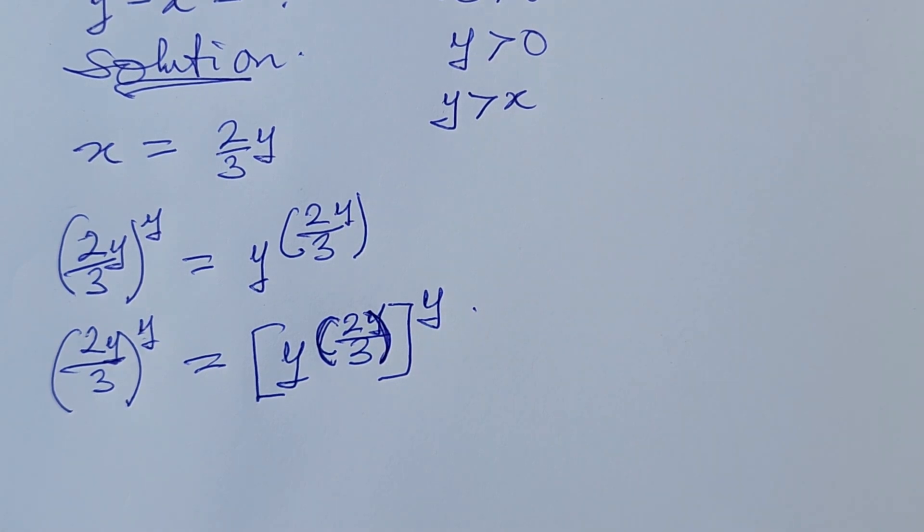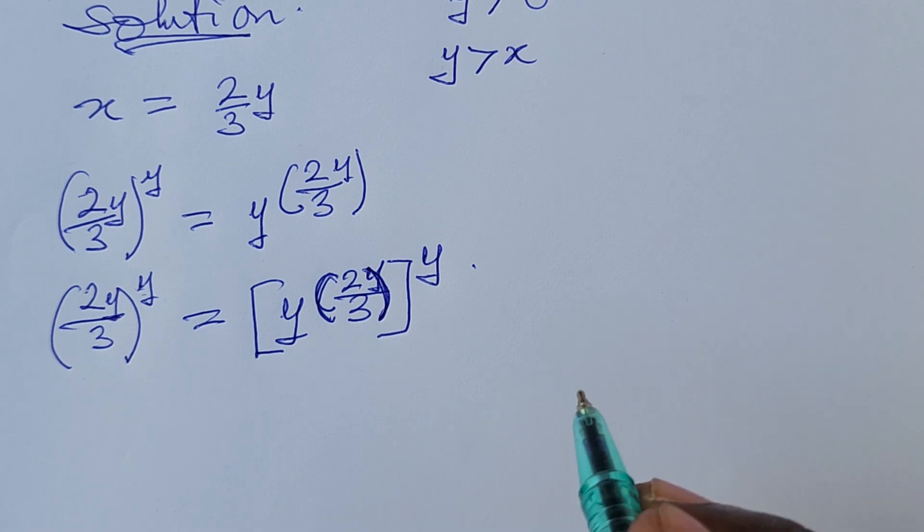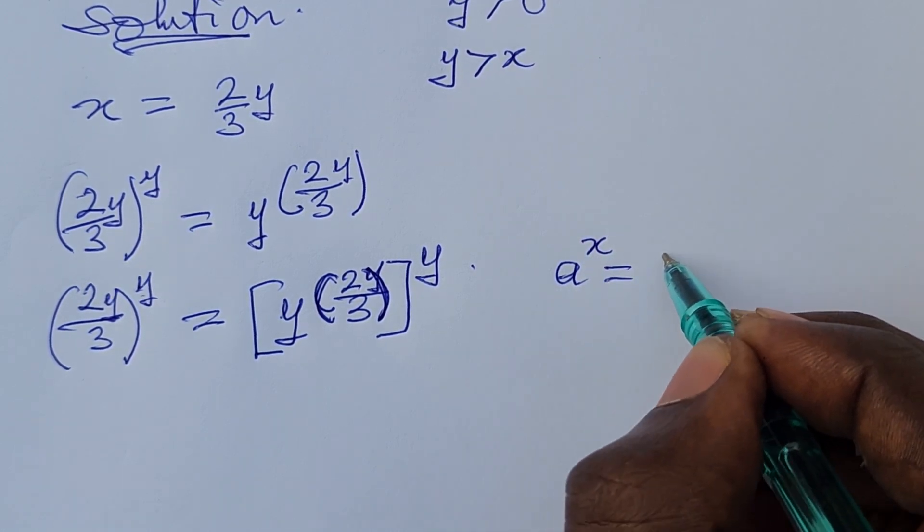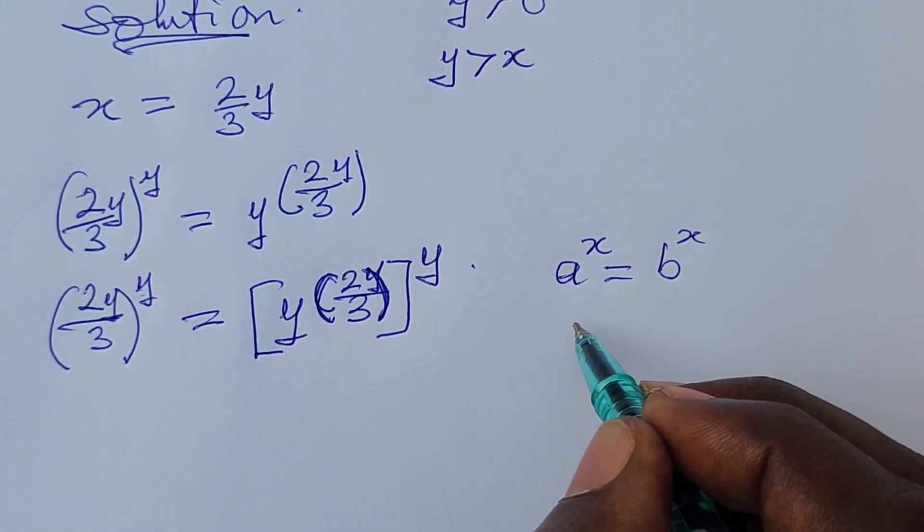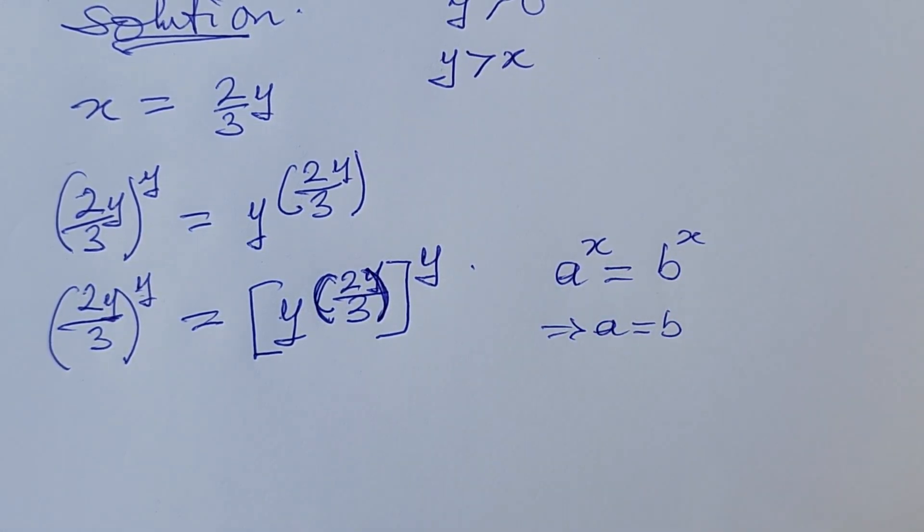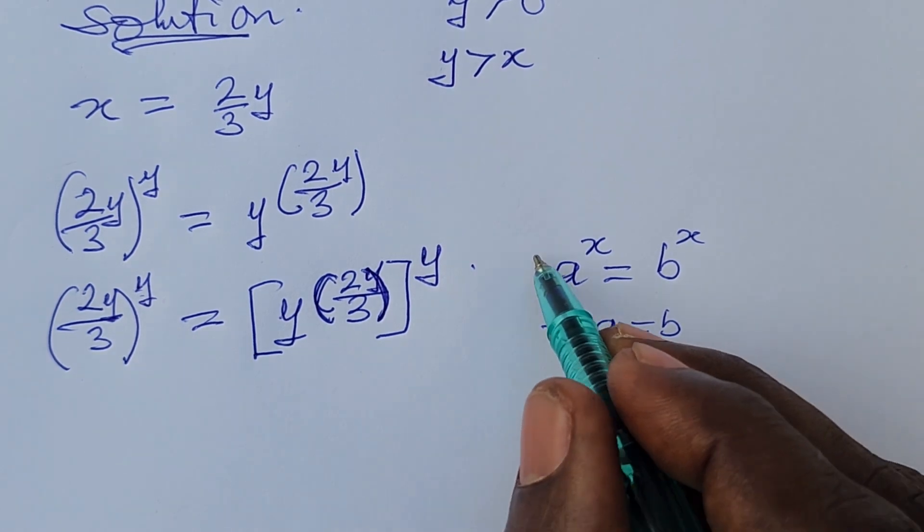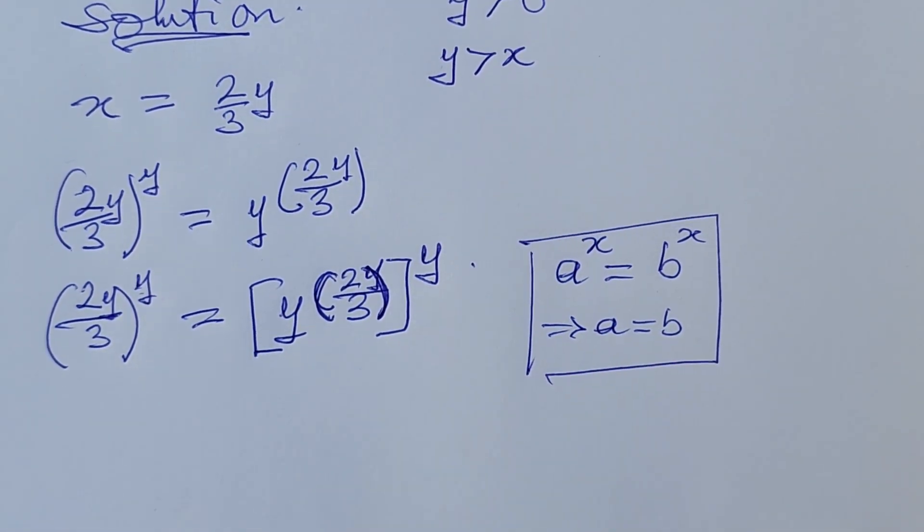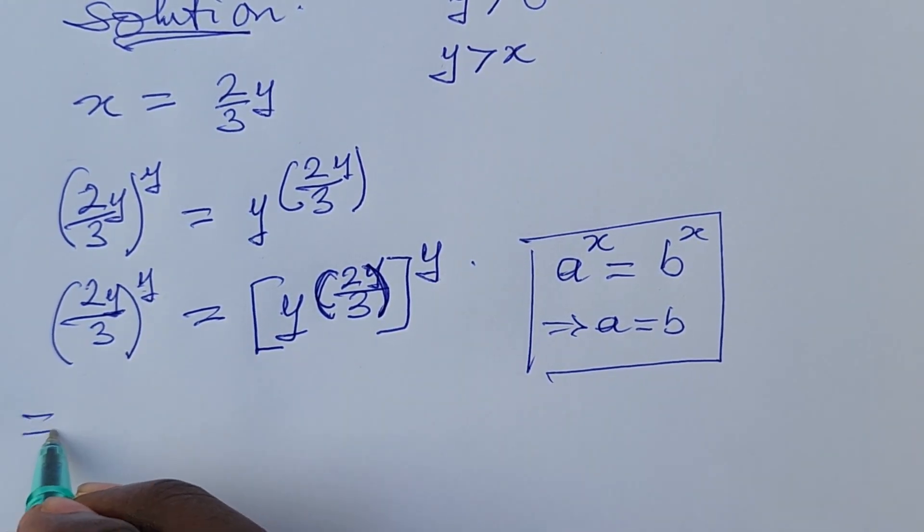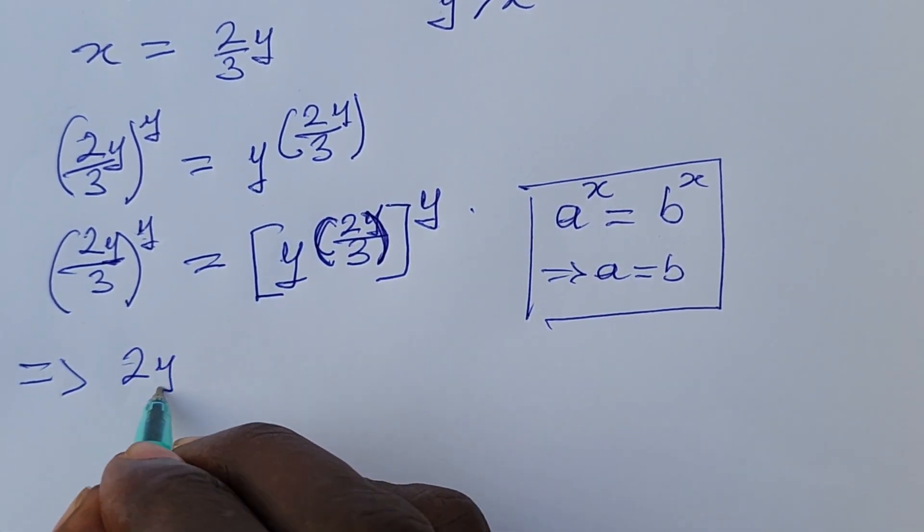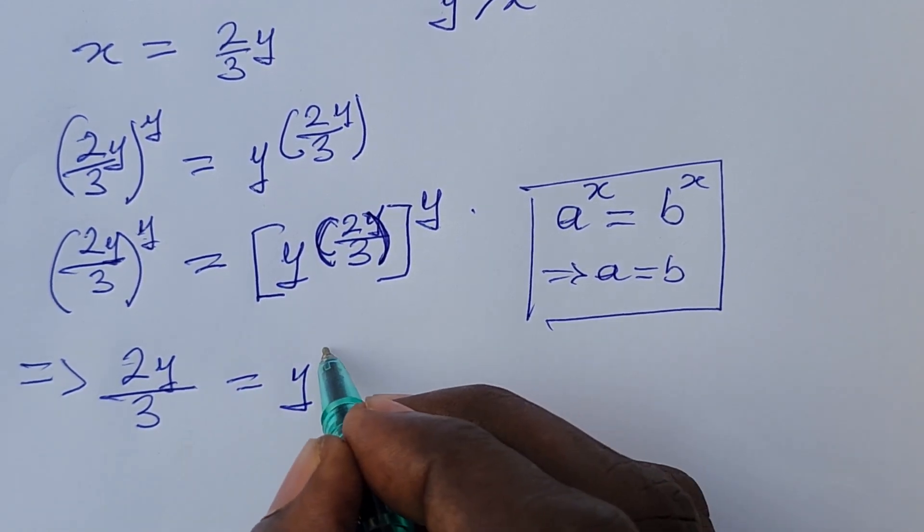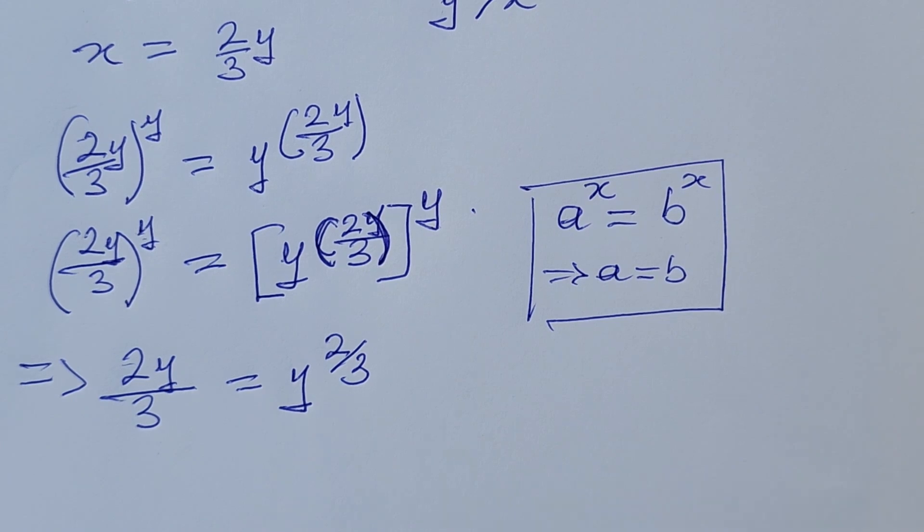From here we can see a pattern playing out. If you recall, if we have a to the power of x equals b to the power of x, this implies that a is equal to b since the exponents are the same. So the bases will be the same. So if we anchor on this, then this and this are the same. This now implies that 2y over 3 is equal to y to the power of 2 over 3.